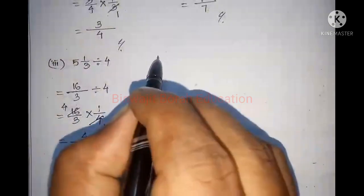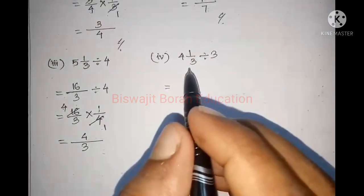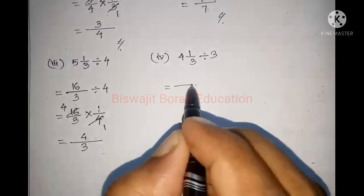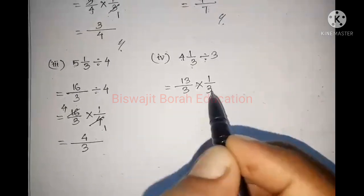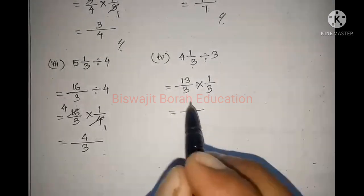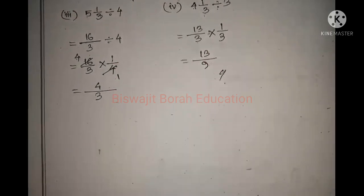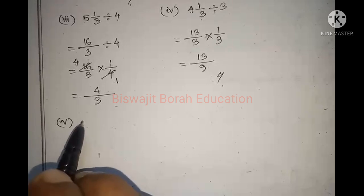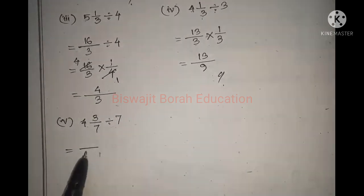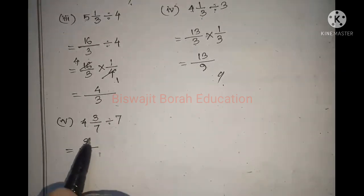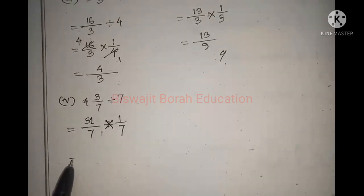Here we go to 4 by 3. Next, number 4, we will call it 4 by 1 by 3 divided by 3. So we will call it 1 by 3, and 3 to the 3. We will call it 1 by 3. Next, number 4: 3 by 7 divided by 7. We will call it 1 by 7 by 7, giving 315.